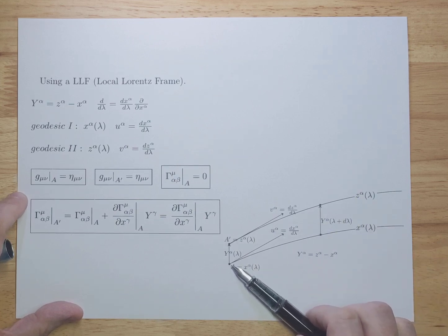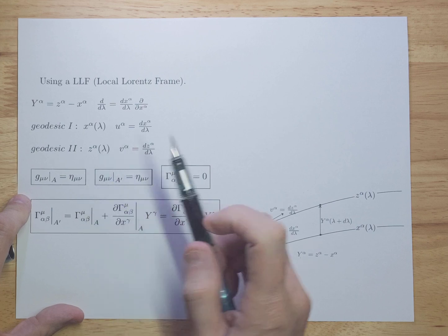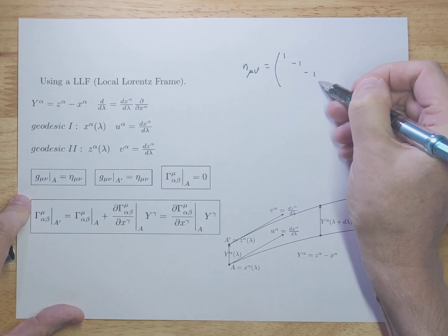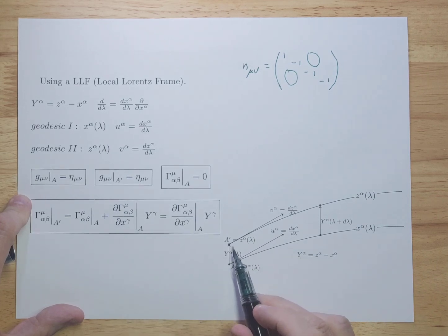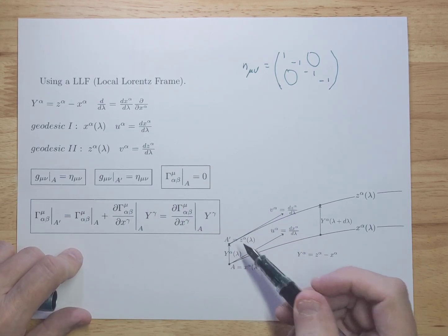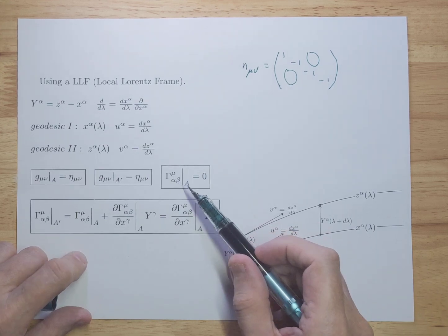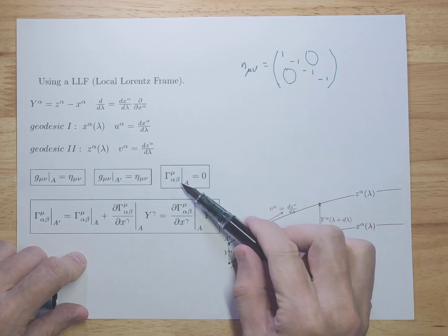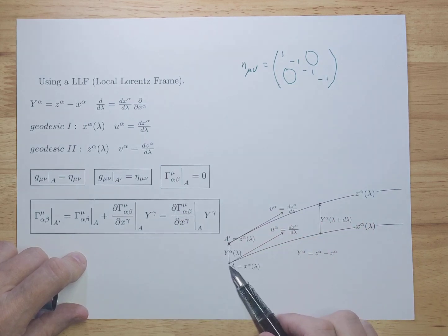Now, in location A, we have our metric g-mu-nu, which is essentially the Lorentzian metric. Depending on your convention, eta-mu-nu could be something like (1, -1, -1, -1) on the diagonal and zeros elsewhere. The same metric applies at A-accent. In A, we have our Christoffel symbols, and we consider it a flat space here, so the connection coefficients in A are considered zero. You can always do that — even in curved spacetime, if you go local into a local Lorentz frame, you can always say they equal zero. Very locally it looks flat.